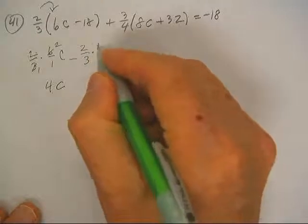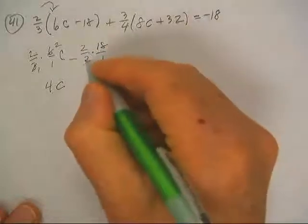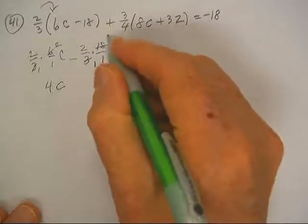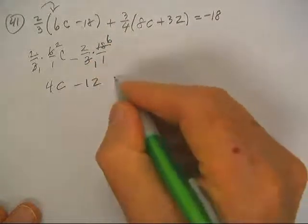Two-thirds and 18 over one. Well, 3 goes into 18 six times, and 2 times 6, that's going to be negative 12.